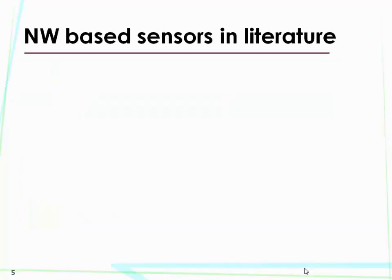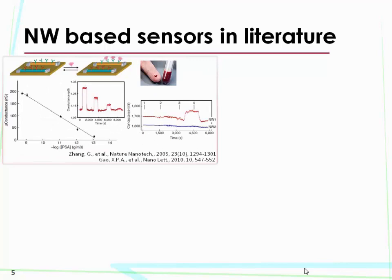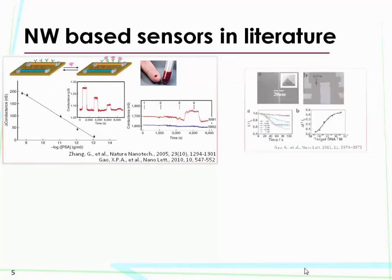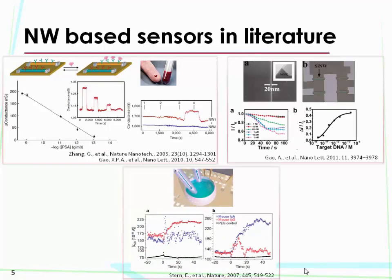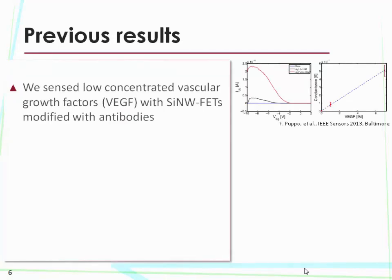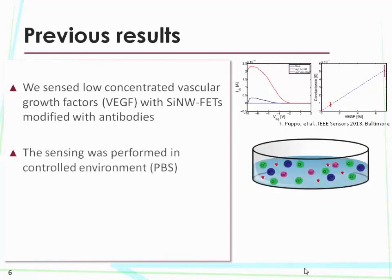In the literature, there are actually a lot of works on silicon nanowire-based sensors. Many groups achieve very high sensitivity detection, but most of them are working in a very controlled environment, which is buffer solution. We also showed last year in Baltimore that we can use silicon nanowire field-effect transistor sensors for the detection of very low concentration of antigen — but we did it in a phosphate-buffered saline solution, so a very controlled environment.